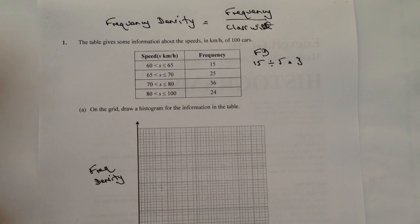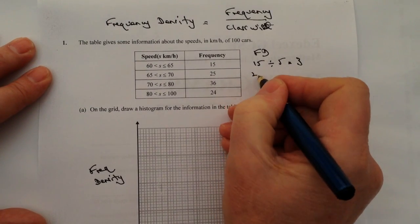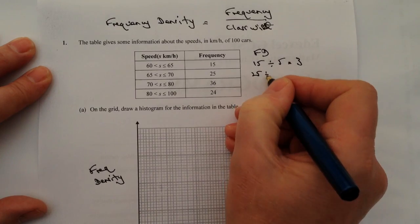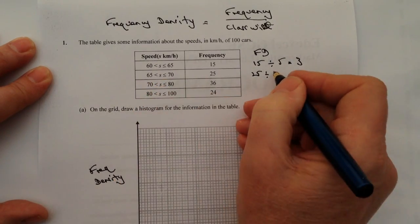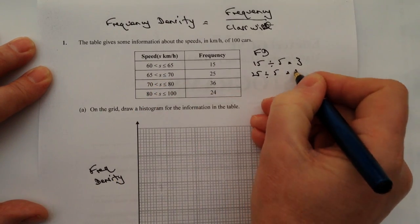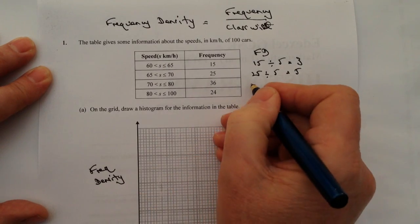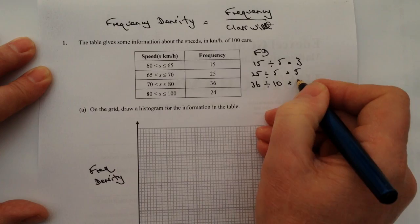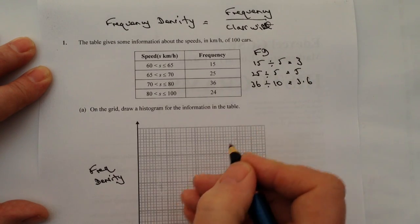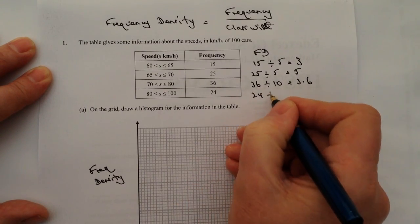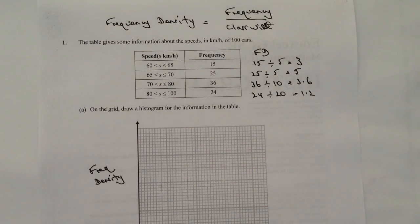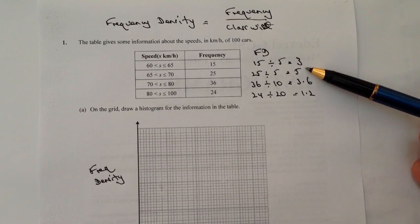And we just really work through the rest of this. Frequency is 25, I'm going to divide it by my class width here which is 5, so that's going to give me 5. I've also got 36 divided by 10, and that's going to be 3.6. And then the last one is 24 divided by 20, and that's going to give me 1.2.